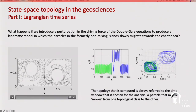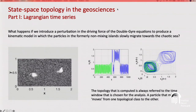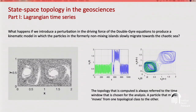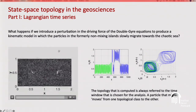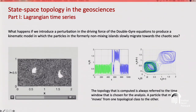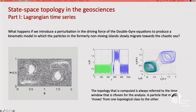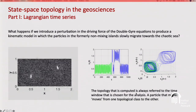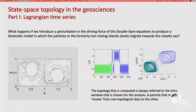What happens if we introduce a perturbation in the driving force of the double gyre to produce a kinematic model in which particles in the former non-mixing islands slowly migrate to the chaotic sea? In that case you can still recognize the circles and triangles, but these regions start losing particles. In the transition, you find mixed time series, and since the topology is computed over a finite time window, a migrating particle is in practice moving from one topology to the other.